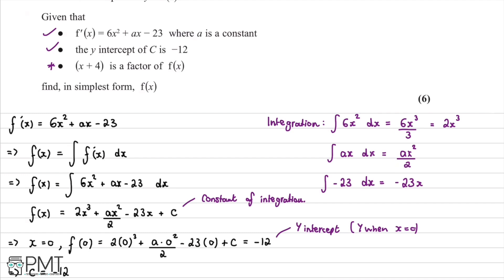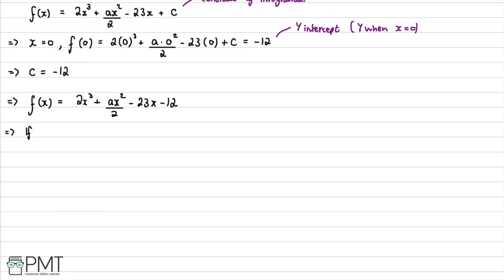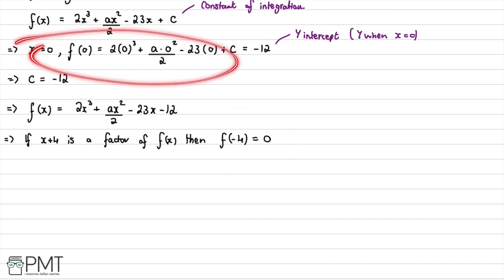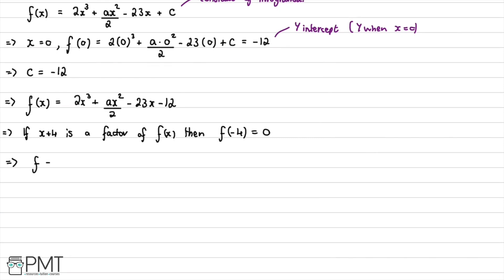If (x + 4) is a factor of f(x), then by the factor theorem, f(-4) = 0 — in other words, -4 is a root. We can use this information by substituting x = -4 into f(x), so f(-4) = 0.